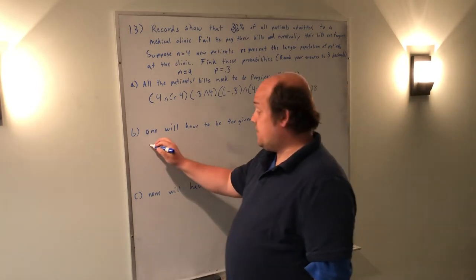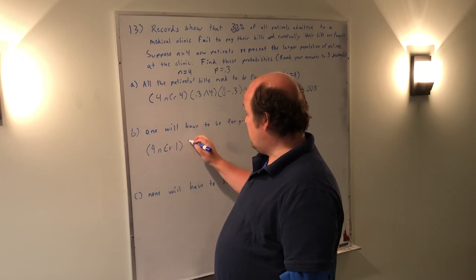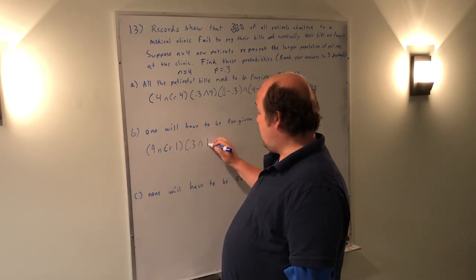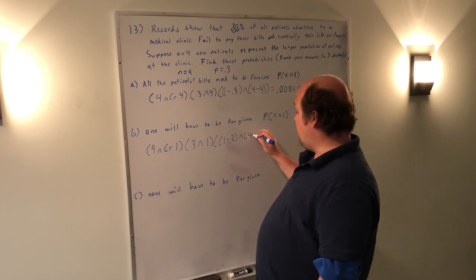To do this, same exact setup. It's out of four, so it's 4 NCR, in this case 1, times 0.3 to the power of 1, times 1 minus 0.3 to the power of 4 minus 1.